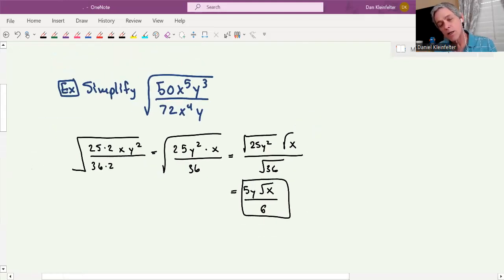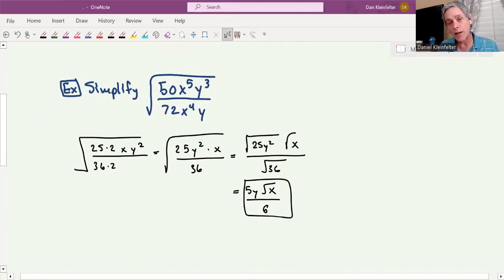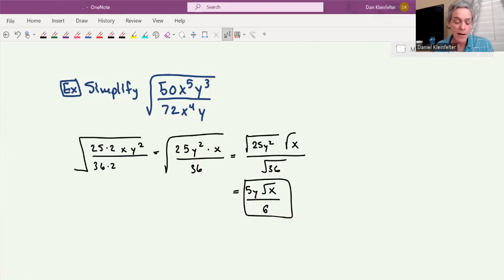That takes us to the end of our work on simplifying square roots for right now. We saw how we can use the product property and quotient property of radicals to separate things. We saw in this last part that we use a lot of fraction simplifying ideas to help us. In the next sections, we'll be working on arithmetic with radicals: add, subtract, multiply, and divide. Along the way, we'll get more practice at this simplification. So in the meantime, let me know if you have any questions, and have a great day.